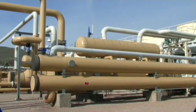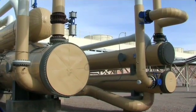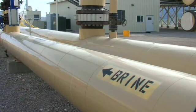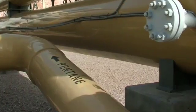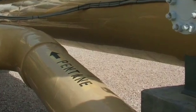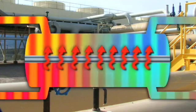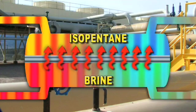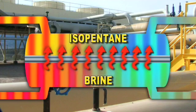They do it by first sending hot water from the geothermal well into a heat exchanger. On one side of the heat exchanger is the hot water, called brine. On the other is a special working fluid known as binary liquid, usually made up of isopentane. The well water and binary liquid never mix inside the heat exchanger, but the heat energy contained in the brine is transferred to the isopentane.